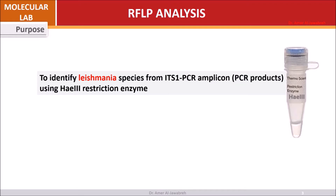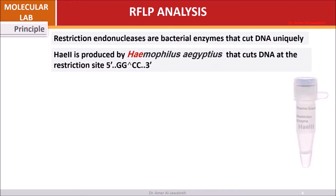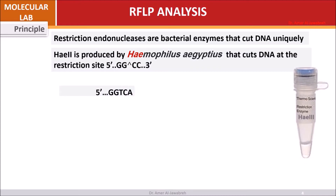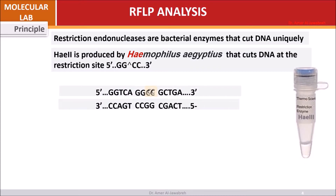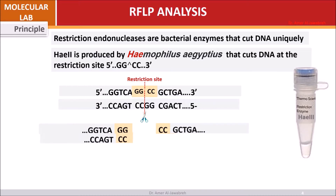Using HaeIII restriction enzyme. Principle: restriction endonucleases are bacterial enzymes that cut DNA uniquely. HaeIII is produced by Haemophilus aegyptius, and cuts DNA at the restriction site shown.